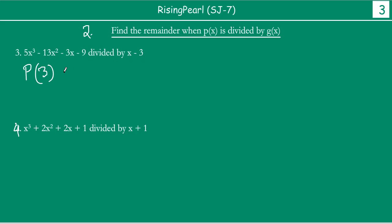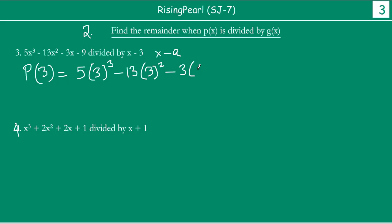This is already given in the form x minus a, so we have to find out the value of the polynomial at x equal to 3. We will find out the remainder of this division. So let us write: 5 times 3 cubed minus 13 times 3 squared minus 3 times 3 minus 9.